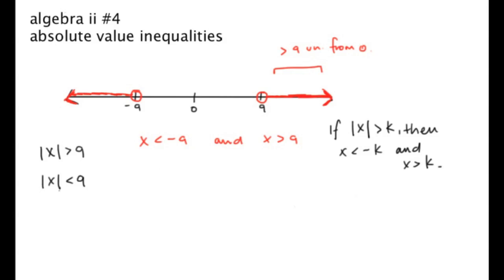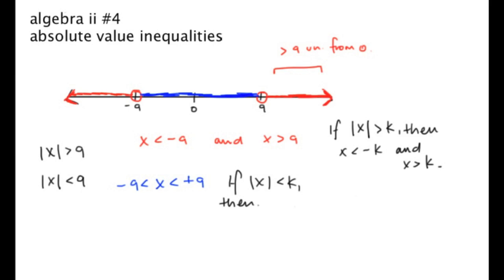Now let's do the absolute value of x is less than 9. It's the same concept — the distance from 0 is now less than 9. That means it's just all the stuff in the middle, because all of that is less than 9 units from 0. In equation format, that's negative 9 is less than x is less than positive 9. The rule: if the absolute value of x is less than k, then negative k is less than x is less than k.